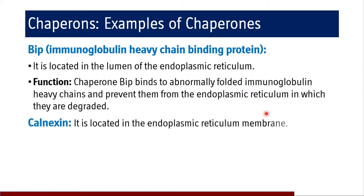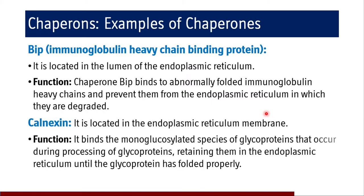Next is calnexin, located in the endoplasmic reticulum membrane. It binds the monoglycosylated species of glycoproteins that occur during processing of glycoproteins, retaining them in the endoplasmic reticulum until the glycoprotein has folded properly.